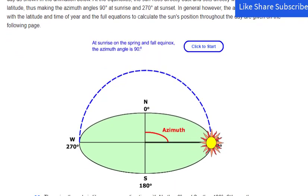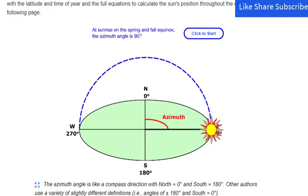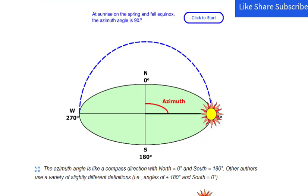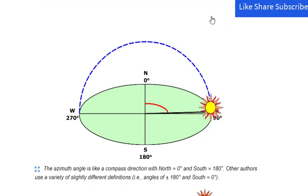The azimuth angle is the compass direction from which the sunlight is coming. At solar noon, the sun is always directly south in the northern hemisphere and directly north in the southern hemisphere.